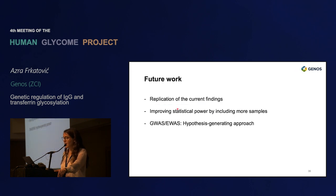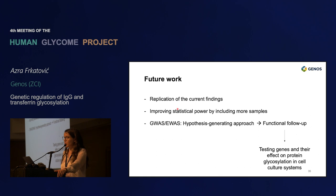We would want to replicate these findings and improve statistical power by including more samples, which can be easily done in genome-wide association studies. Both GWAS and EWAS are hypothesis-generating approaches, so there is always a need for functional follow-up — testing genes and their effects on protein glycosylation in cell culture systems.